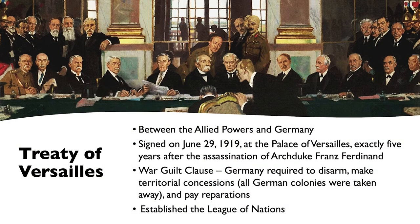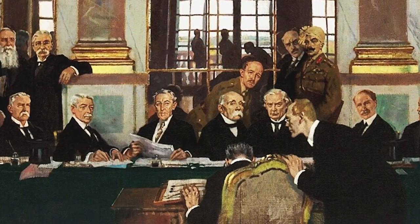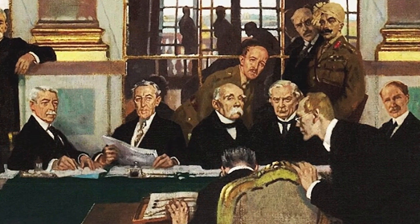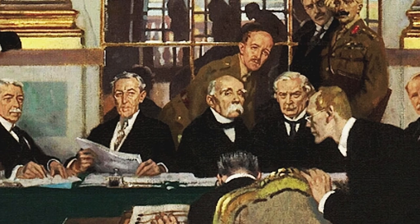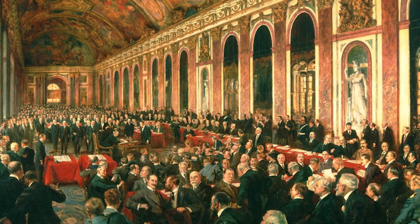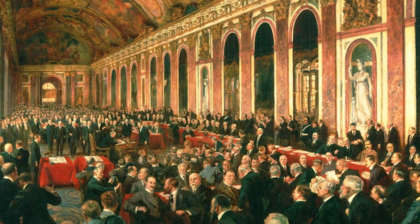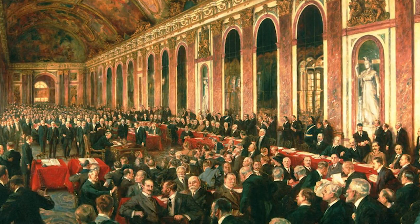The Treaty of Versailles ended the war between the Allied Powers and Germany. It was signed on July 29th, 1919 at the Palace of Versailles in France — exactly five years after the assassination of Archduke Franz Ferdinand. The war guilt clause required Germany to disarm, make territorial concessions, give up all German colonies, and pay reparations costing over 30 billion dollars. This greatly weakened an already weakened Germany, and this resentment would lead to the rise of the Nazi party. At this time, Adolf Hitler was a young soldier in the German army — and these conditions were going to lead to another war.